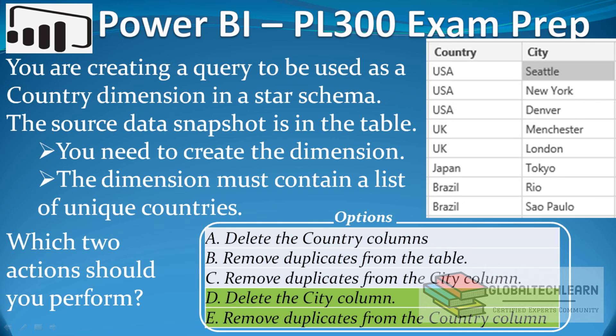So now let's go back to our question. We can see we deleted the city column and we removed duplicates from the country column. So options D and E are the correct answers.